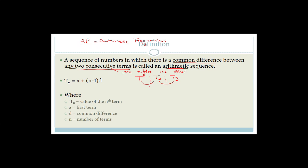For example, with the sequence 2, 4, 6, 8 — if you want to know the next term — A is the first term, which is 2. The common difference D is 2 because we're adding 2 each time. The next term is term five so N is 5. We can go TN equals A plus (N minus 1) times D.